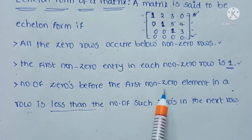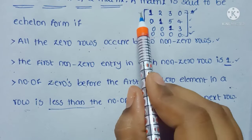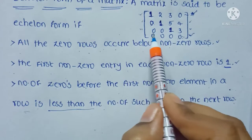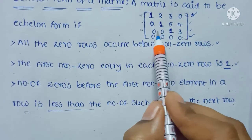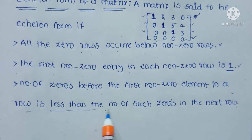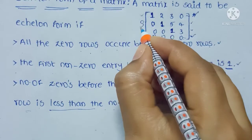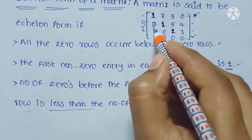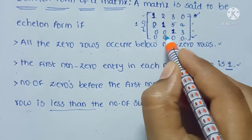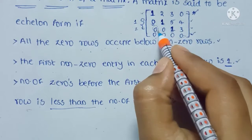The third condition: the number of zeros before the first non-zero element — the number of zeros before the non-zero element. In row 1, there are no zeros. In row 2, the number of zeros before the non-zero element is 1. In row 3, the number of zeros before the non-zero element is 2. And it is less than the number of such zeros in the next row. So comparing these rows: row 2 has 1 zero before the non-zero, and row 3 has 2 zeros before the non-zero element.